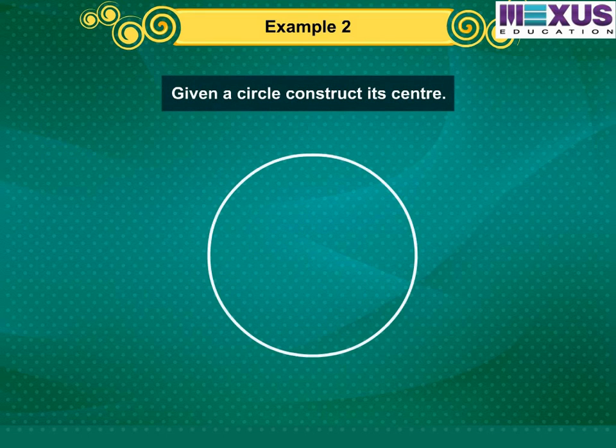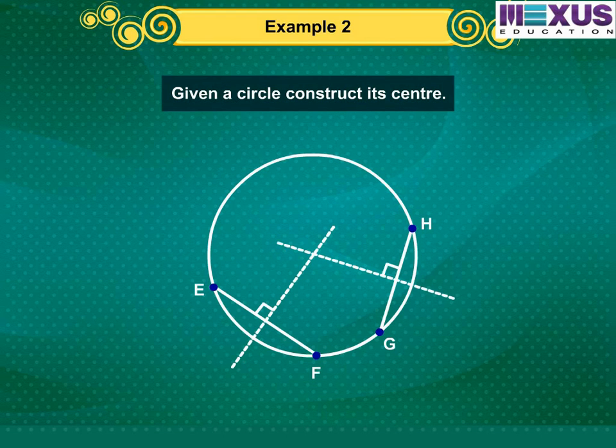Suppose you are given a circle, give a construction to find its center. Let us first take the given circle. Now, take any two different chords, EF and GH of the circle and draw perpendicular bisectors of these chords. Let these perpendicular bisectors meet at point O. Hence, O is the center of the given circle.